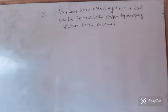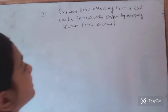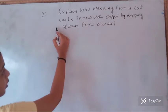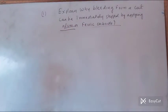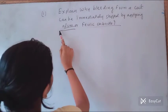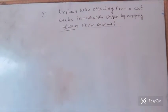The first question for today's video is: explain why bleeding from a cut can be immediately stopped by applying alum or ferric chloride. Basically this question is asking why does the bleeding immediately stop when we apply alum or ferric chloride. Let me explain.